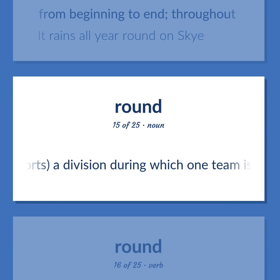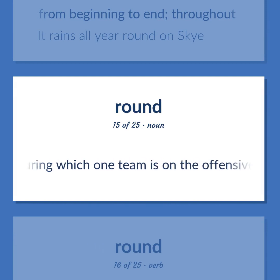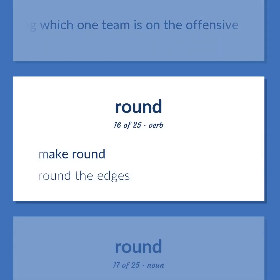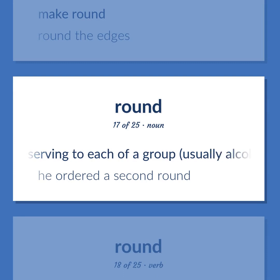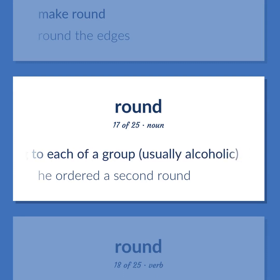Sports: a division during which one team is on the offensive. To make round — example: round the edges. A serving to each of a group, usually alcoholic. Example: He ordered a second round.